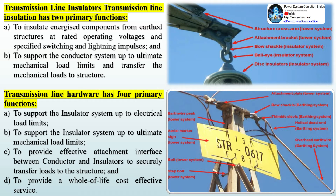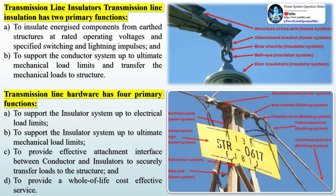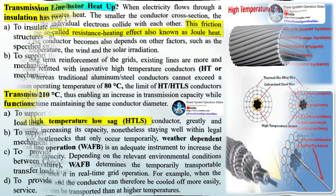Transmission line insulation has two primary functions: to insulate energized components from earthed structures at rated operating voltages and specified switching and lightning impulses, and to support the conductor system up to ultimate mechanical load limits and transfer the mechanical loads to structure. Transmission line hardware has four primary functions: to support the insulator system up to electrical and ultimate mechanical load limits, to provide effective attachment interface between conductor and insulators to securely transfer loads to the structure, and to provide life-cost-effective services.